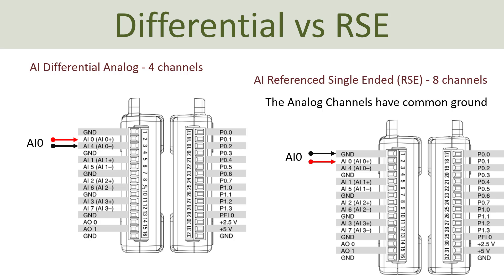Here you see the difference in wiring when it comes to differential or referenced single-ended. On the left side I am using analog input channel AI0 for a differential wiring, so I put the positive wire here on this pin and the negative wire here on this input. While in referenced single-ended, I use this common ground pin as a reference. So this is differential wiring and this is referenced single-ended wiring.